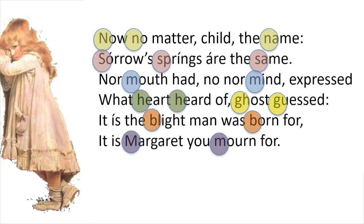Here we see the direction the poet's thoughts are moving in. 'Sorrows, springs are the same' — the grown-up Margaret will weep because she knows she's going to die. The little girl Margaret, of course, doesn't know this — at least not consciously. Her mouth and mind have not expressed it, but her heart has heard of it; her ghost, her spirit, has guessed. And then the final couplet: 'The blight man was born for' — we were all born to die. 'It is Margaret you mourn for.' She thinks she's crying for the leaves, but in her heart she knows that if a leaf can die, so can she.